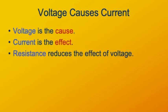The voltage is what causes the current. The current is the result of that, and the resistance reduces the effect of the voltage. The more the resistance, the less current there is for a given voltage.